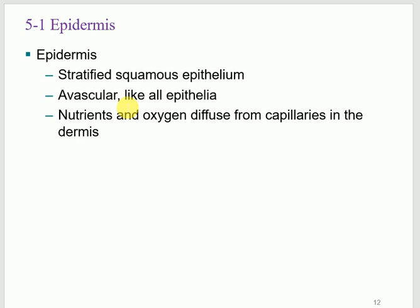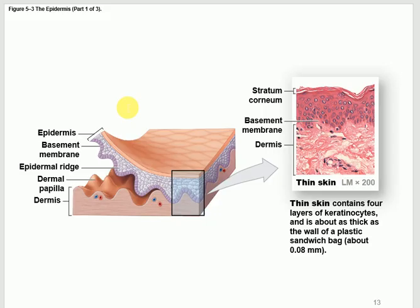Stratified squamous epithelium means multiple layers, named according to the top layer — which must be squamous, or flat. The lower layers don't have to be squamous. The epidermis is again avascular — no blood vessels — getting nutrients from the underlying dermis. This is also how the epidermis and dermis fit together.